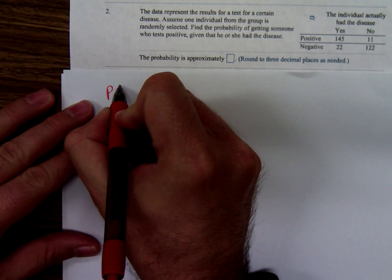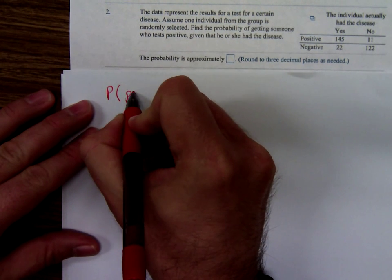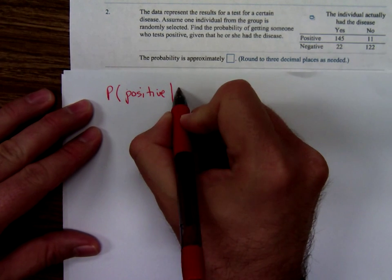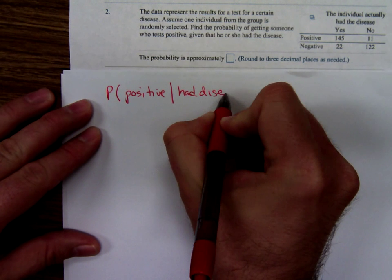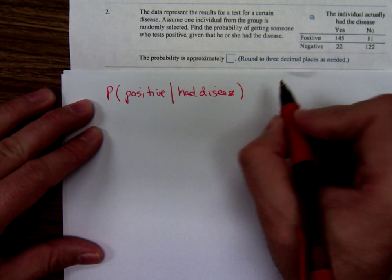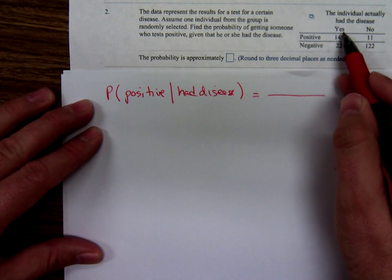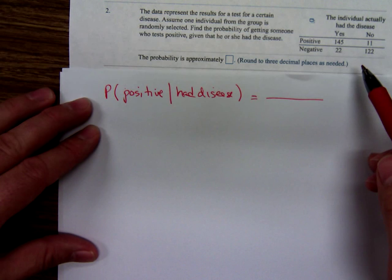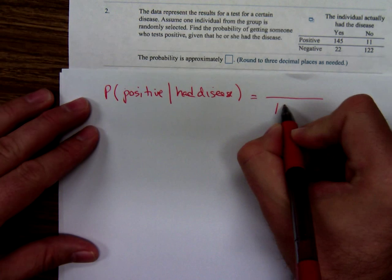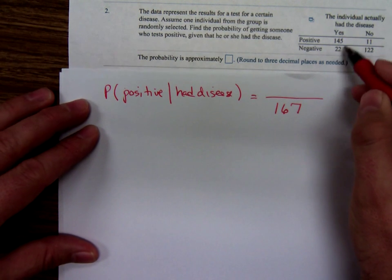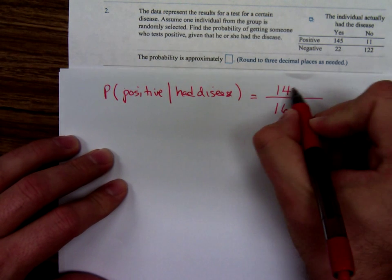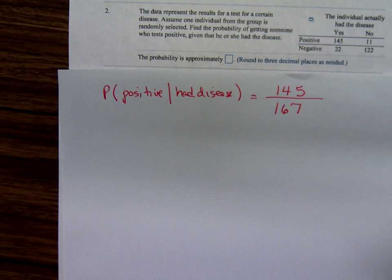So we want to know the probability of a person testing positive given that they had the disease. The ones that had the disease are the yes. So, add up 145 and 22, that's 167. So 167 people actually had the disease. How many of those tested positive? Well, 145.